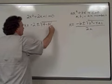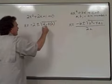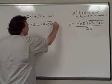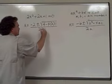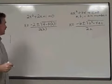minus 4 times a, which is 2, times c, which is 1. All of that divided by 2 times a, and a again is 2.